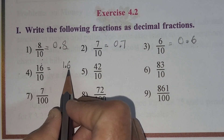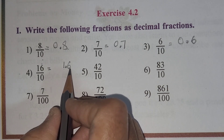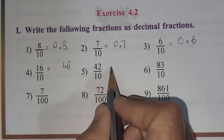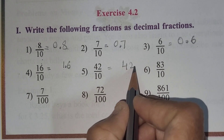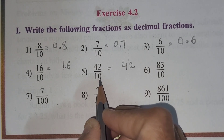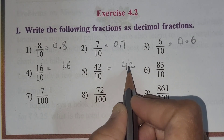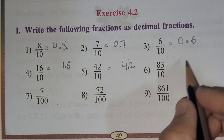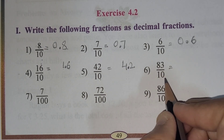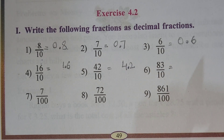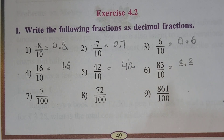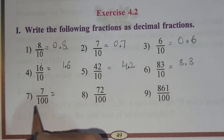So the answer for 16 by 10 is 1.6. Now 42 by 10: write the numerator 42 as it is, one zero in the denominator, put the decimal point after one digit — 4.2 is your answer. And 83 by 10 — the answer is 8.3.